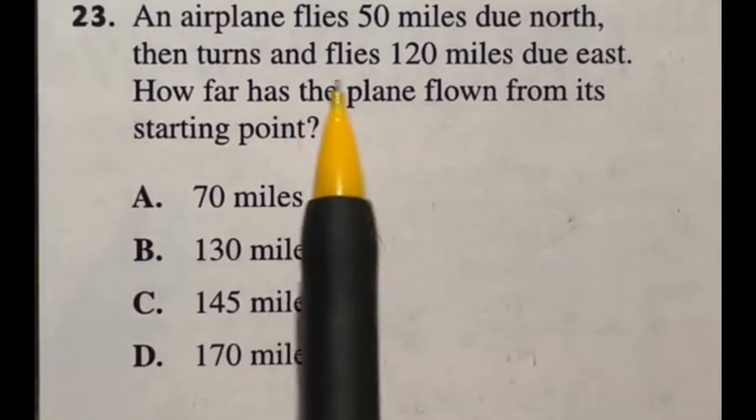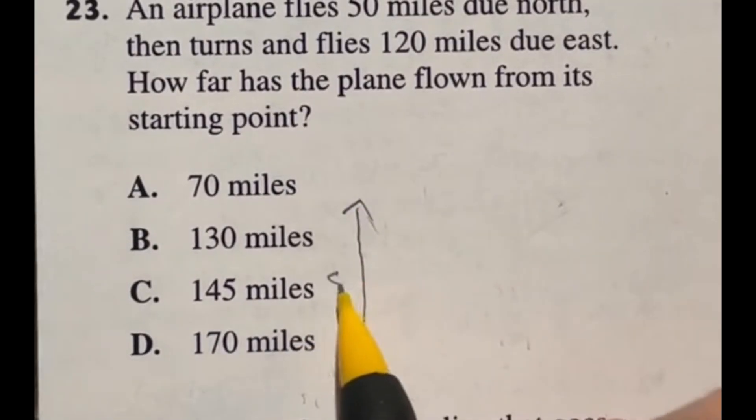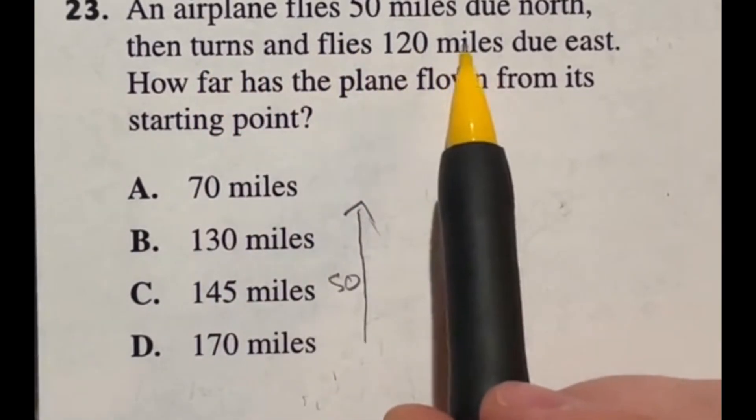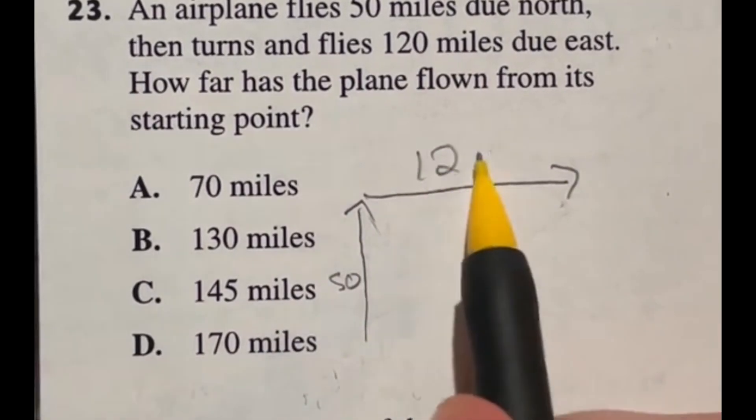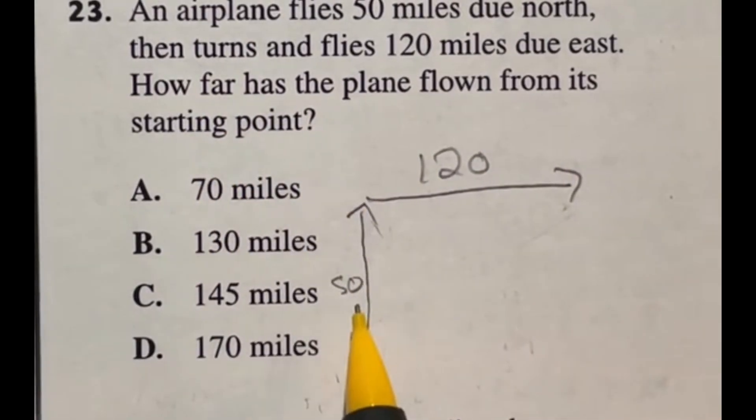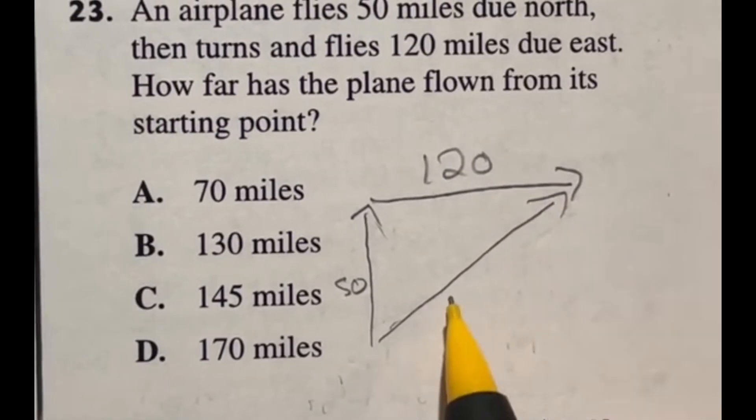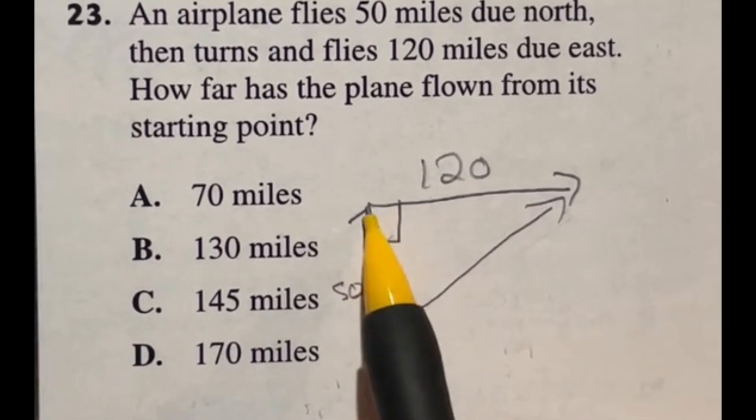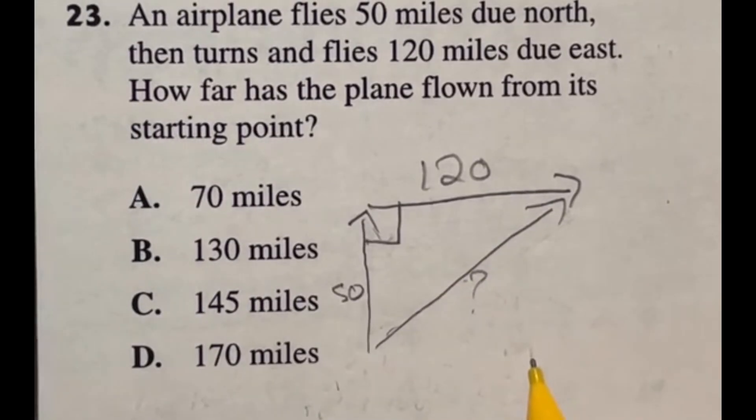So number 23: an airplane flies 50 miles due north. Let's just draw it out as we do it. They're going 50 miles due north. Then from there, it says they turn and fly 120 miles due east. That means I'm turning right and going that way 120. And then we want to know how far has the plane flown from its starting point? Well, you could be like, oh, they're going up 50 and then 120. No, they're talking about this diagonal here. How much is that going to be? So this is a Pythagorean theorem question where this is your 90 degree angle from turning from north to east. And we need to find this missing side over here.